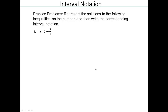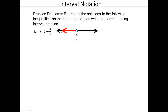Now we'll do some examples — writing the algebraic form on a number line and then in interval notation. For example, x is less than negative three-quarters: you draw a number line with a hole at negative three-quarters because it's not included. x is smaller, so you go in the negative direction. The interval notation is negative infinity to negative three-quarters, with a round bracket at negative three-quarters because it's not included.